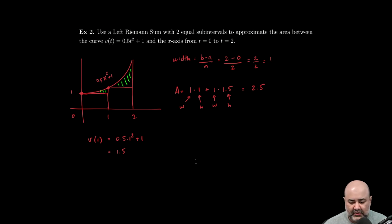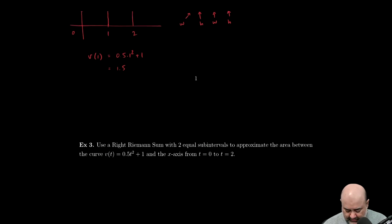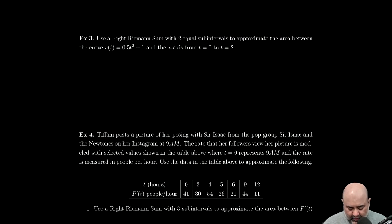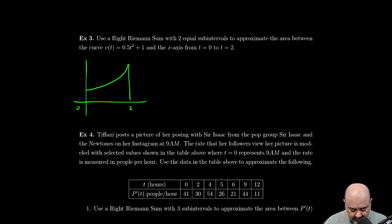All right, so in this case, same function but right Riemann sums with two sub-intervals. So I guess we'll just keep this color. So I'm going to use the width again from the previous example, which was 1, and now I'm using the right endpoint. So I have to use the height at this endpoint in order to determine what the height of the rectangle will be. So this is my first rectangle. And then I have to use the height at this endpoint to determine what the second rectangle's height would be.